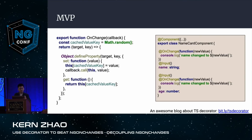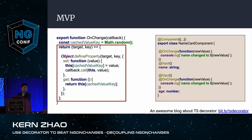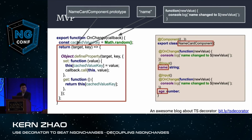Here is our first implementation of the onChange decorator — on the left is the implementation, and on the right I'm keeping my blueprint as reference. A decorator is essentially a function factory. It returns a new function with two parameters: target and key. When placed beside a property, TypeScript automatically passes the prototype of the class to target, and the property key name or age to key. Object.defineProperty is triggered at compile time.